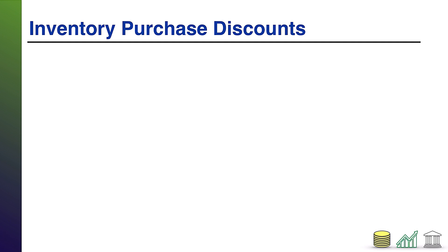I should specify right up front that I am specifically referring to how to deal with inventory purchase discounts in a perpetual inventory system. This is where things often confuse students — the treatment of discounts in a perpetual system. First I'm going to show you the scenario without a discount, then show you what changes because of a discount.